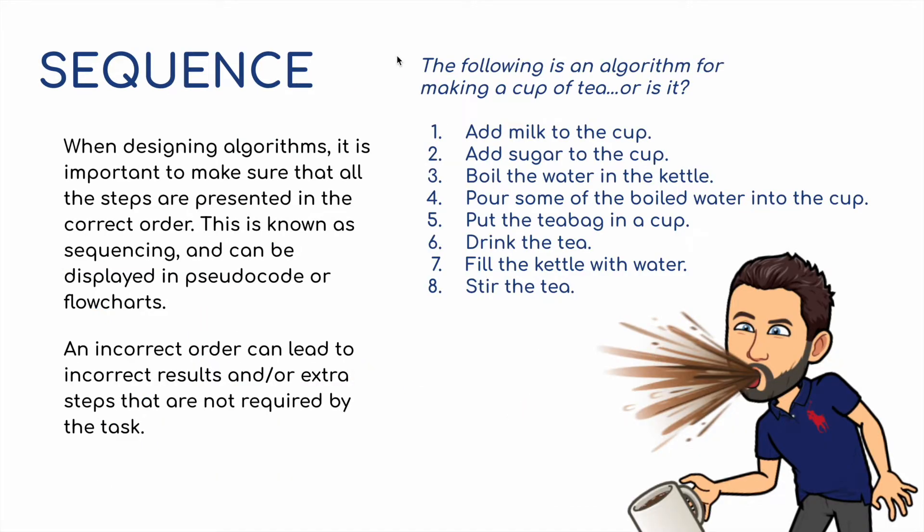We're going to start off with sequence. When designing algorithms it is important to make sure that all the steps are presented in the correct order. This is known as sequencing and can be displayed in pseudocode or in a flowchart. An incorrect order can lead to incorrect results and or extra steps that are not required by the task.